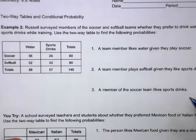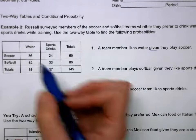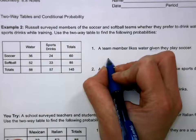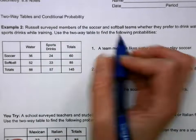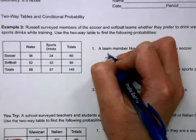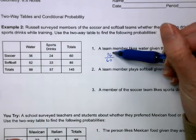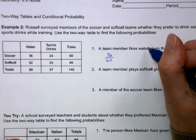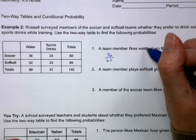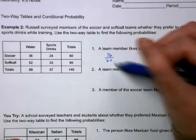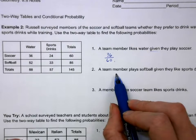First: the probability that a team member likes water given they are a soccer player. The total number of soccer players is 60, so that's our denominator. Of those, 36 like water. For conditional probability, this is the probability of liking water and being on the soccer team, divided by the total soccer players.